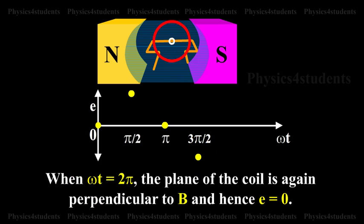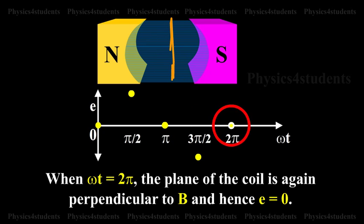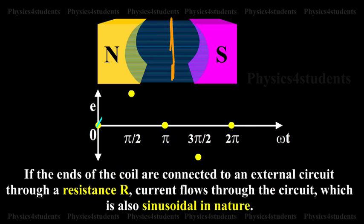When ωt = 2π, the plane of the coil is again perpendicular to B and hence E = 0. If the ends of the coil are connected to an external circuit through a resistance R, current flows through the circuit which is also sinusoidal in nature.